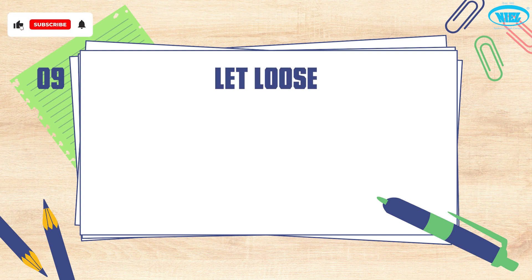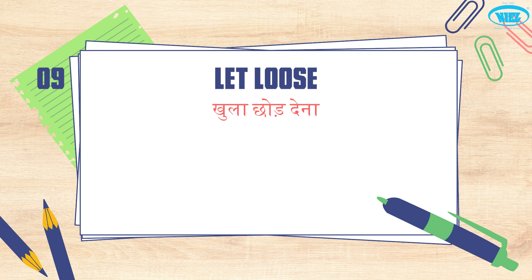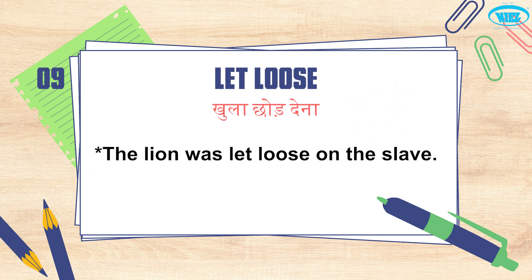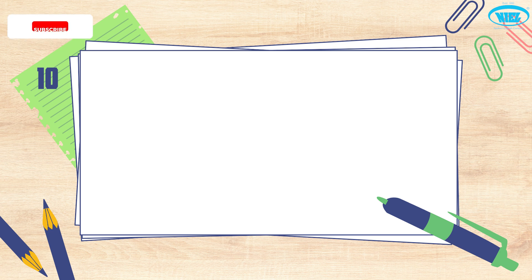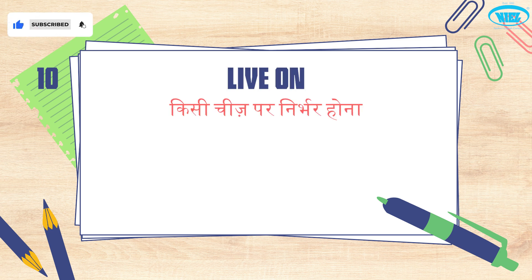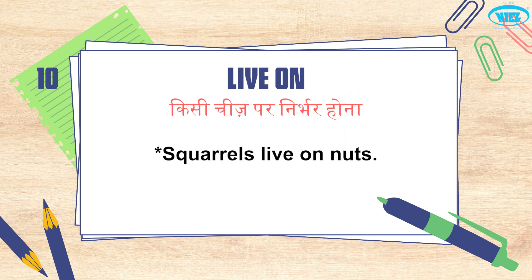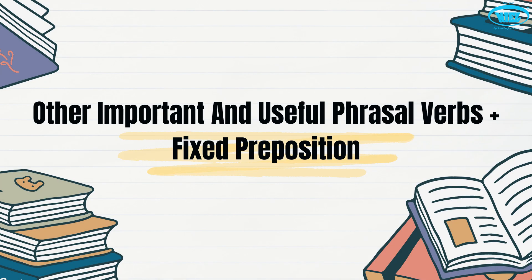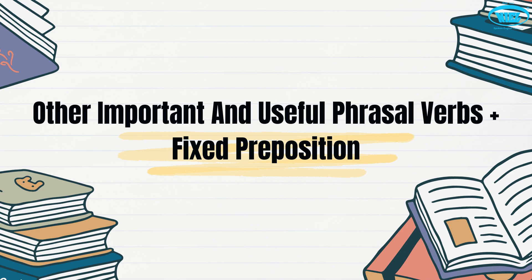Next is 'let loose', which means to set something completely free. For example: 'The lion was let loose on the slave.' The last one is 'live on', which means to depend on something. For example: 'Squirrels live on nuts.' Well guys, these were some useful phrasal verbs with fixed prepositions. I hope you are clear with all of these and will be using them correctly.